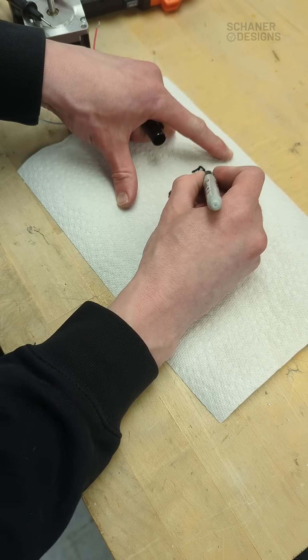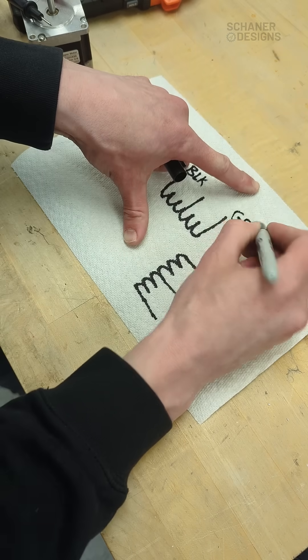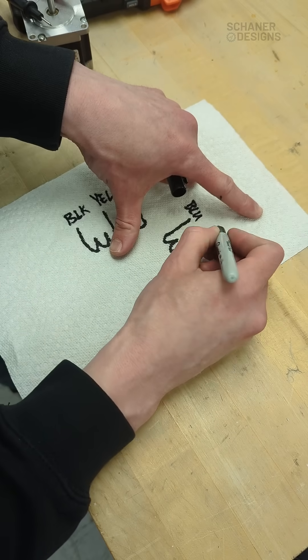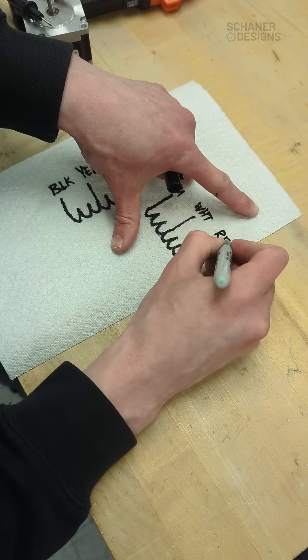So one of these is black one of these is green and then one is yellow and then on the other side we've got blue white for the center tap and red.